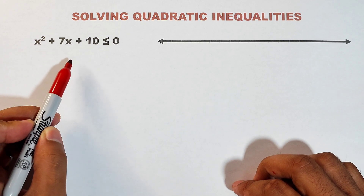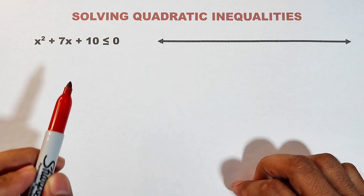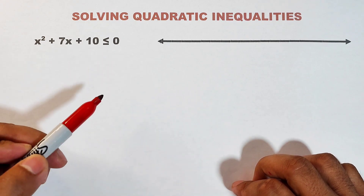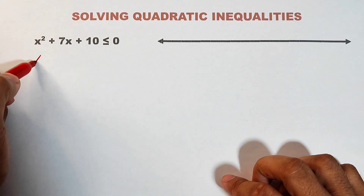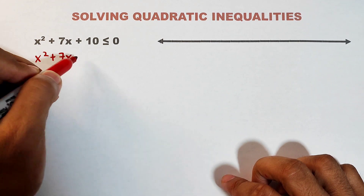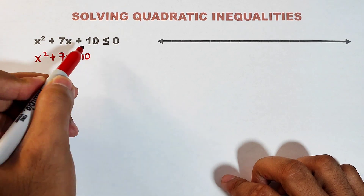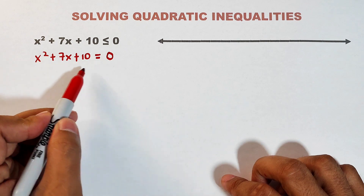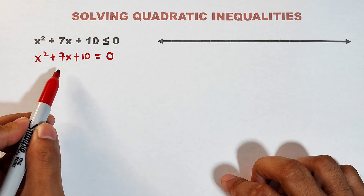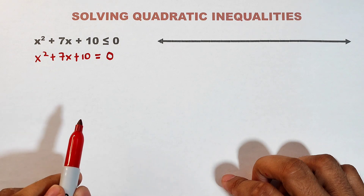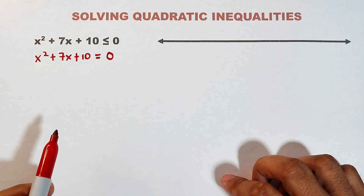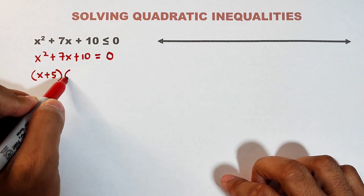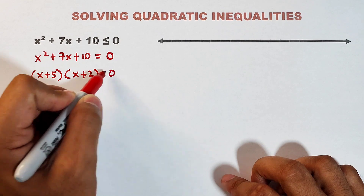Example number one: x squared plus 7x plus 10 is less than or equal to zero. This one is already in standard form. So the first thing we need to do is to convert this inequality into a quadratic equation: x squared plus 7x plus 10 equals zero. Then solve for the values of x, because they will serve as the critical points for this inequality. The factors are (x + 5)(x + 2) = 0.